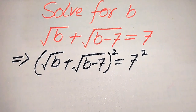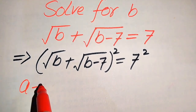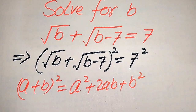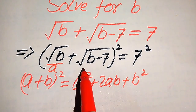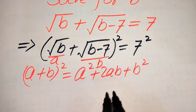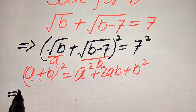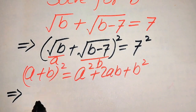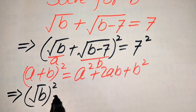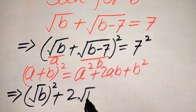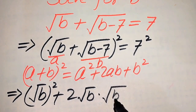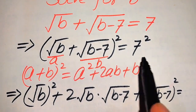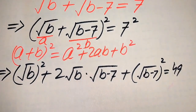On the left hand side we need to use the algebraic formula: (a + b)² = a² + 2ab + b². Here our a is square root of b and our b is square root of b minus 7. When we apply this formula, it becomes: (√b)² + 2·(√b)·(√(b−7)) + (√(b−7))² equals 7 square, and 7 square becomes 49.